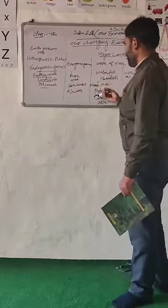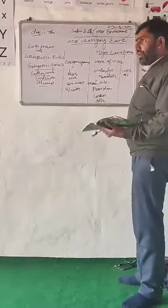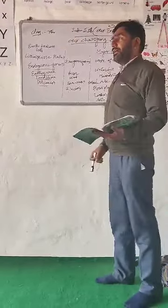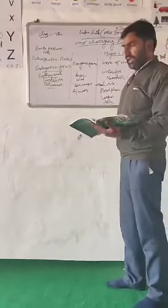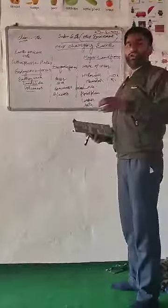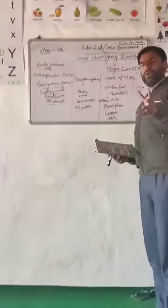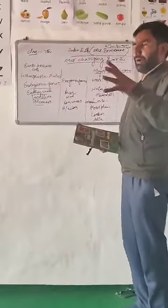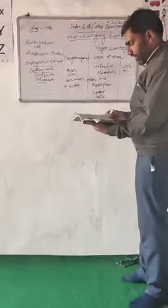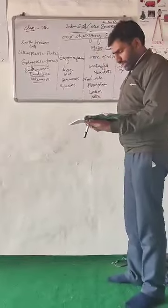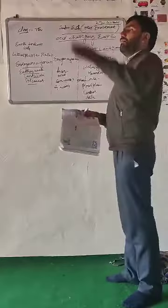I have already told you about the work of rivers. When rain falls on the mountains, on the uplands, it flows down in different streams — or we can say tributaries. These tributaries accumulate and form a big river, a big stream. When the river flows, it goes into the plain land.